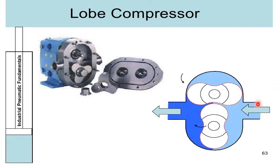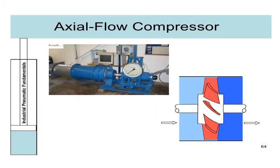Next is the axial flow compressor. The axial flow air compressor consists of a rotor and a stator. The rotor is mounted on frictionless bearings, so it is free to rotate. The stator blades are a fixed set of blades.